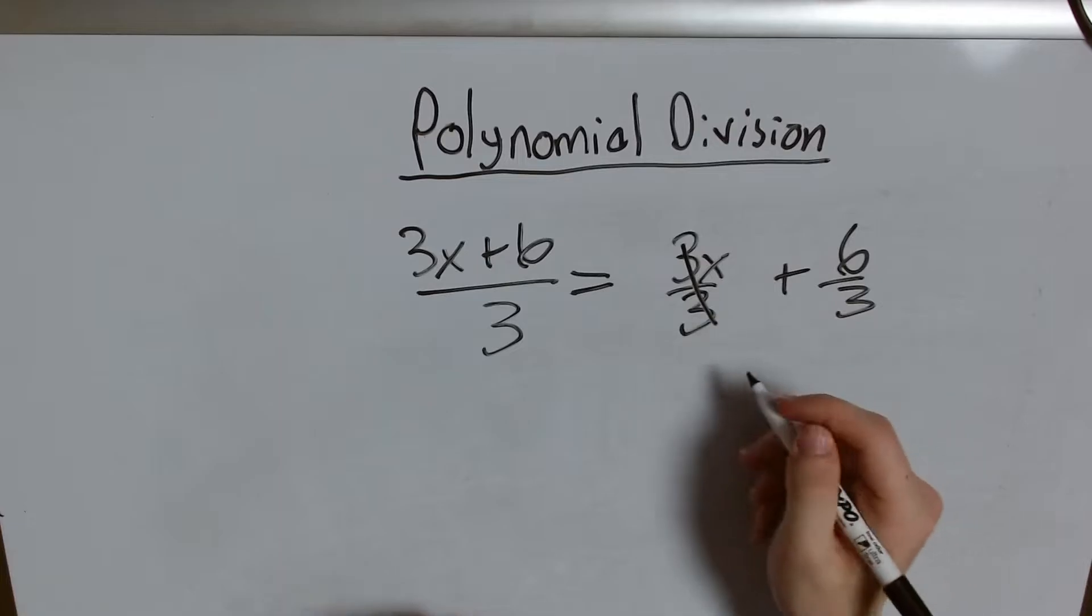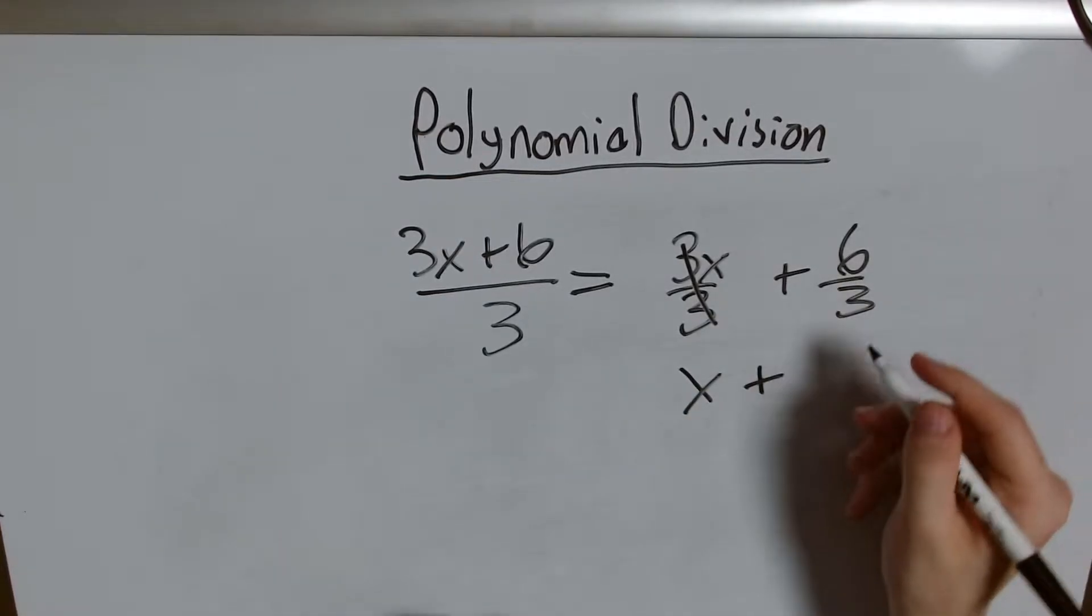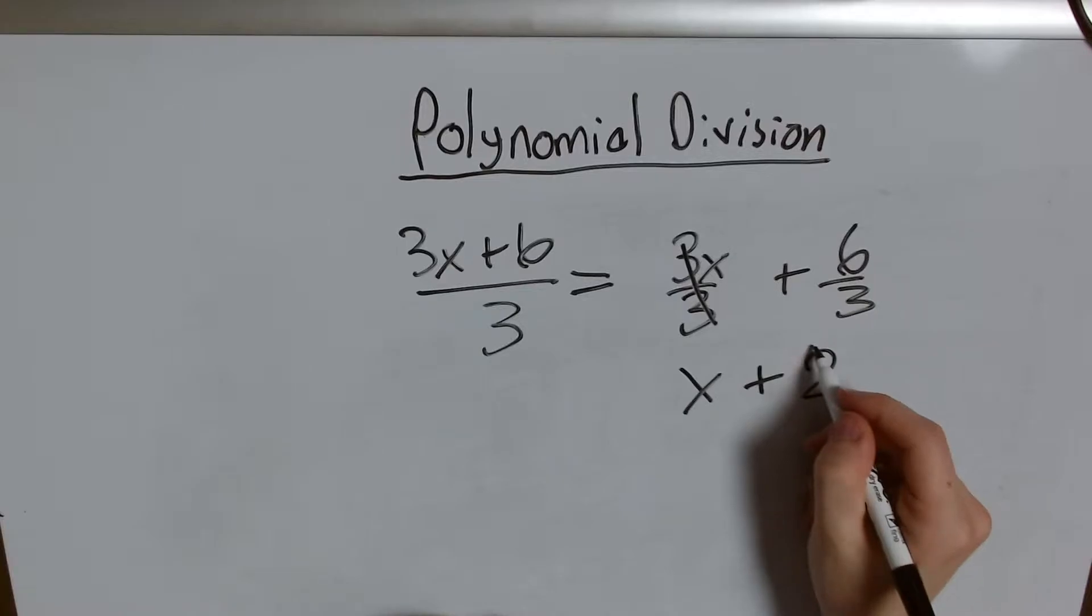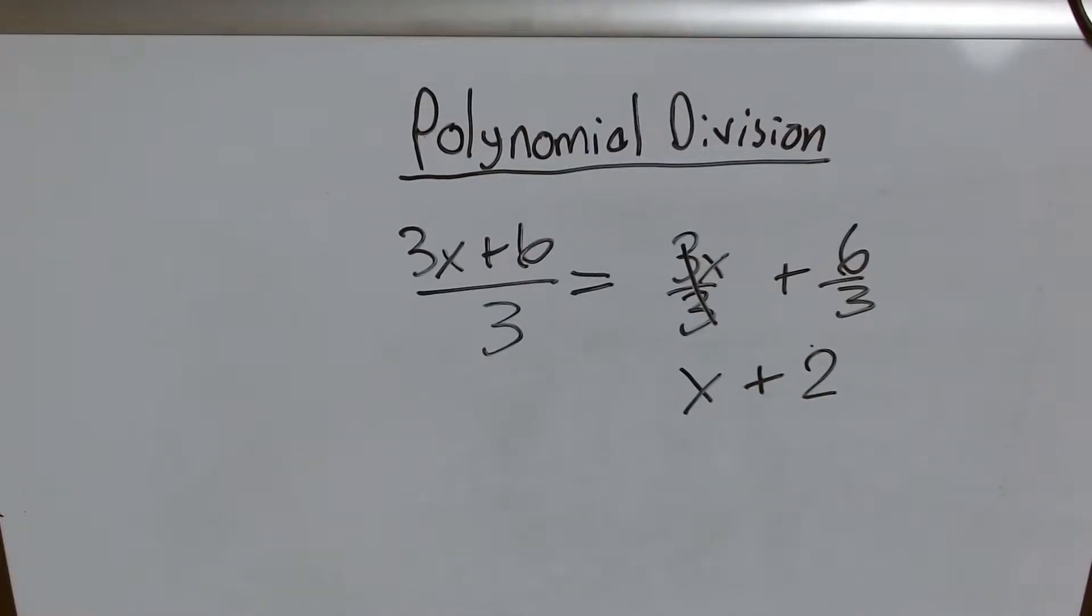I cancel out my 3 here, I get x and 6 over 3 is just 2. So I have x plus 2. Boom, I just divided my polynomial.